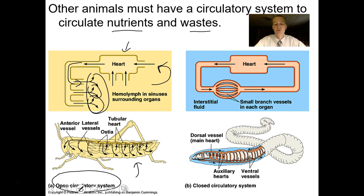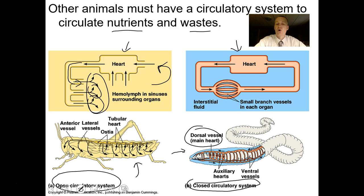When you get into more complex animals, we have a closed circulatory system. In the earthworm, for example, it has pumping vessels — a heart or heart-like structure — but all of the blood or blood-like material is found inside of blood vessels. It's never just in the body cavity, and that's called a closed circulatory system. We're going to focus on closed circulatory systems in these higher creatures.